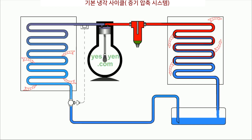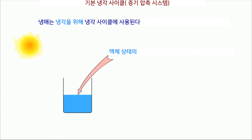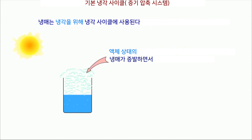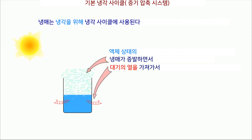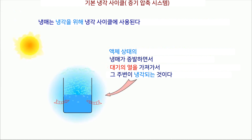Basic Refrigeration Cycle — Vapor Compression System. Refrigerants are used in a refrigeration cycle to provide cooling. Refrigerants in liquid state evaporate by absorbing heat from the atmosphere, thus cooling the surroundings.